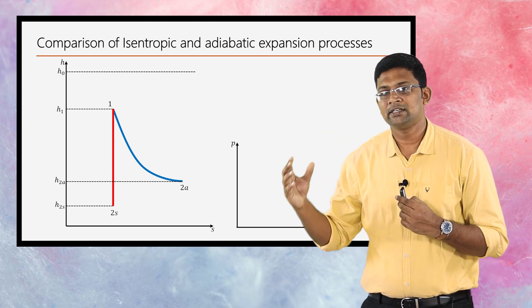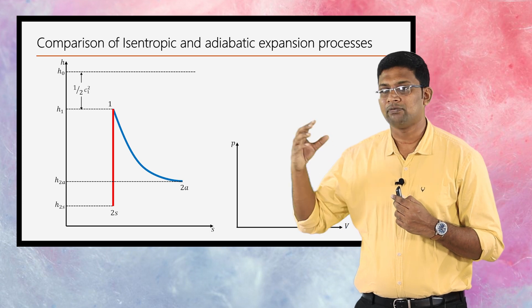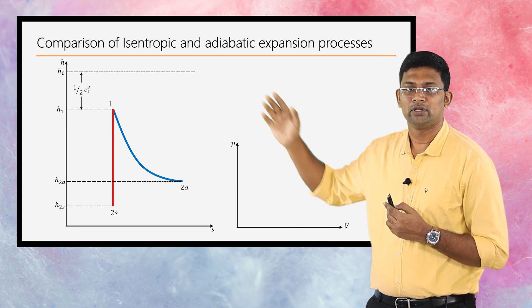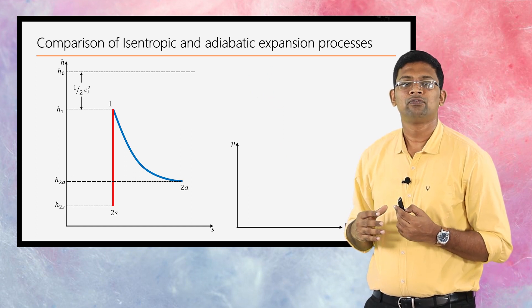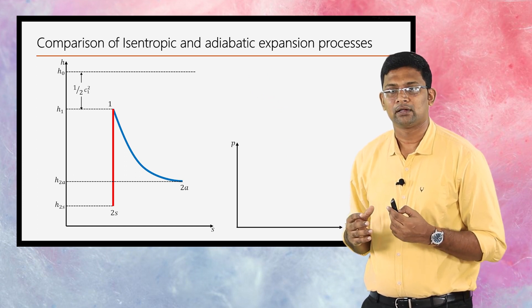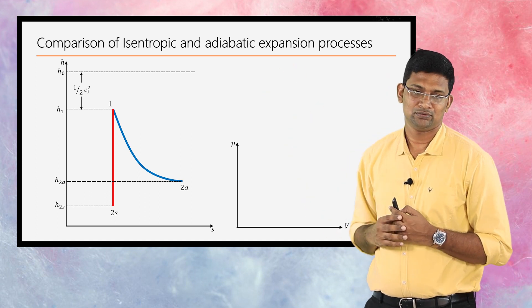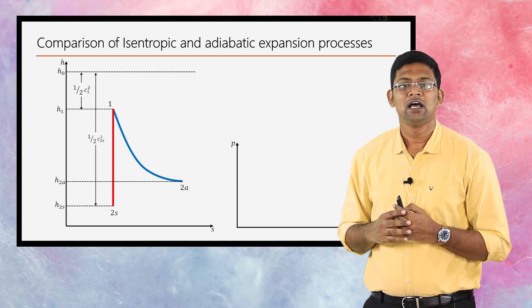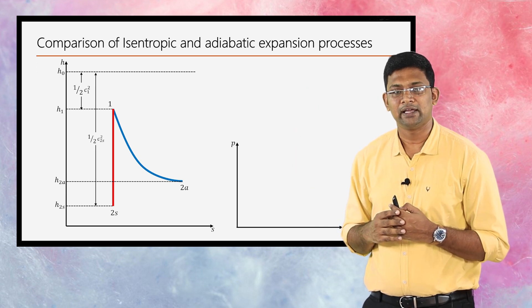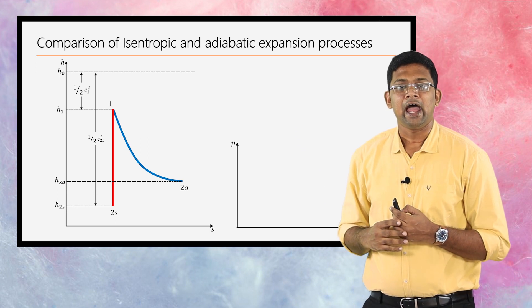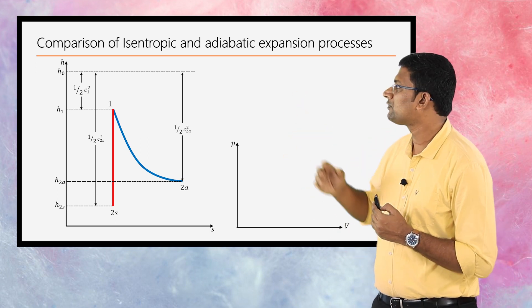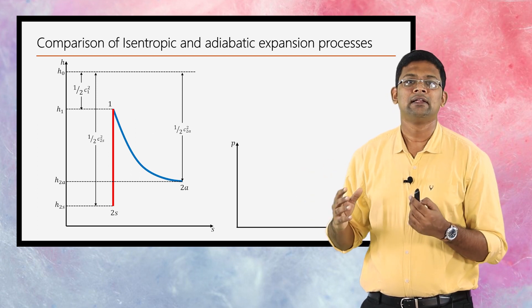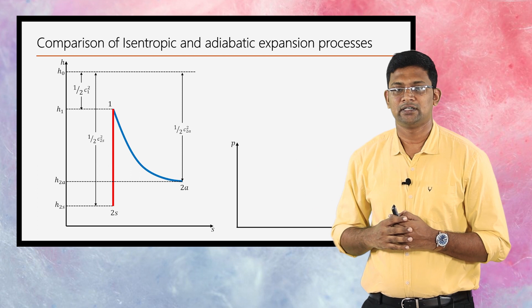Let us relate these static enthalpies with the stagnation enthalpy h₀. We know h₀ = h + ½C². So: h₁ + ½C₁² = h₀; h₂s + ½C₂s² = h₀; and h₂a + ½C₂a² = h₀. Basically we are relating the static enthalpies with the stagnation enthalpy.